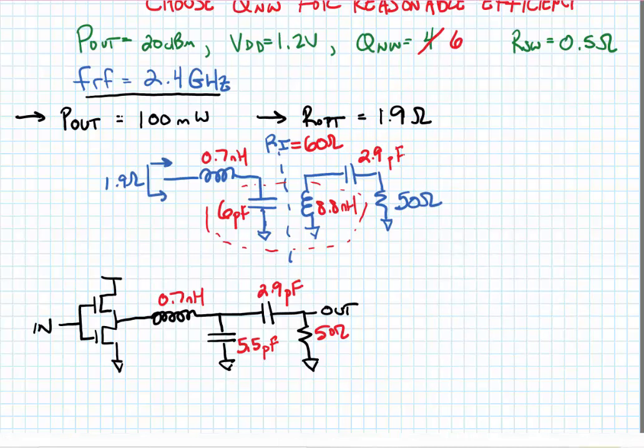So in the end, here's our class D circuit that would put out 20 dBm using a 1.2 volt supply, a Q network of 6, and assuming the transistors were sized to give a switching resistance of about half an ohm. This doesn't say anything about the quality factor of the individual components or the input power it would take to drive the MOS transistors that would result in a switching resistance of half an ohm, but it does give you an idea of the calculations you need to make in order to design a class D power amplifier.